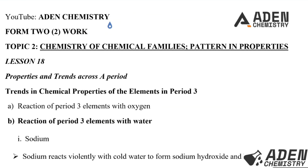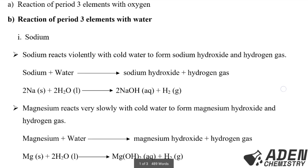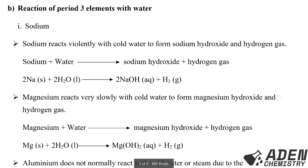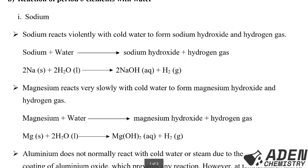Hello students, welcome. Previously in lesson 17 for Period 3, we were dealing with trends in chemical properties of the elements in Period 3, and we had done part A: reactions of Period 3 elements with oxygen. Today we want to go to lesson 18 where we are going to proceed to the second trend in chemical properties — reaction of Period 3 elements with water. We are going to start with the first member of Period 3, which is sodium.